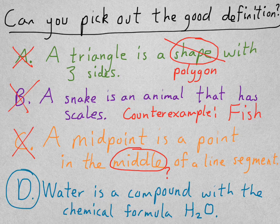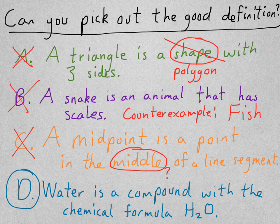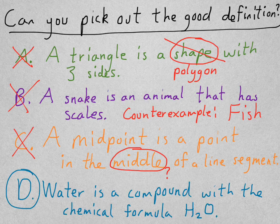The good definition is D. Water is a compound with the chemical formula H2O. It's a true biconditional because water is always H2O and H2O is always water. Those two always go together. And, it's being very specific.